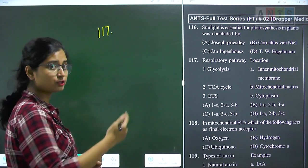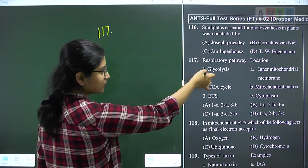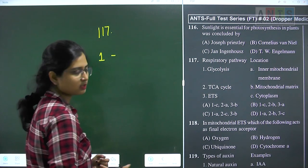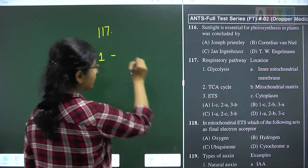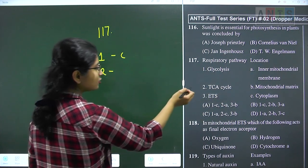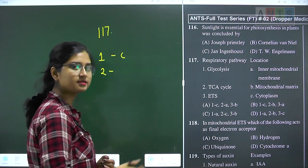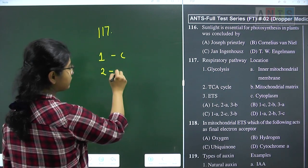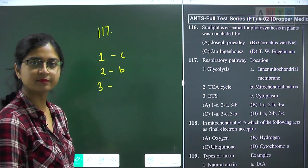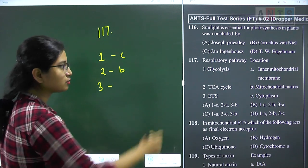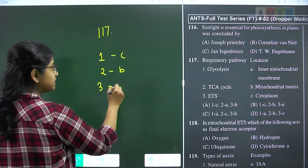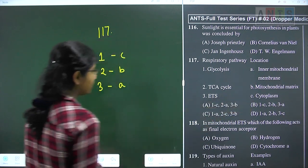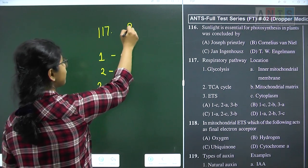Question 117: match the step of the respiratory pathway with the location where it occurs. Glycolysis, the first step of respiration, occurs in the cytoplasm — 1C. The TCA cycle (Krebs cycle) occurs in the mitochondrial matrix — 2B. The electron transport system (ETS) has electron carriers present on the inner mitochondrial membrane — 3A. So the code is 1C, 2B, 3A. Question 117 answer is option B.